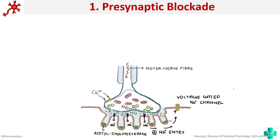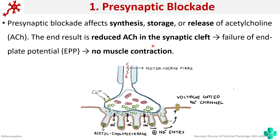The first one is presynaptic blockade, which means the drug acts on the presynaptic neuron. The mechanism is quite simple — they affect the synthesis, storage, or release of acetylcholine so that no acetylcholine is released into the synaptic cleft, causing no depolarization of the muscle and naturally no muscle contraction. There are drugs that can reduce either synthesis, storage, or release, and we will see a few examples.